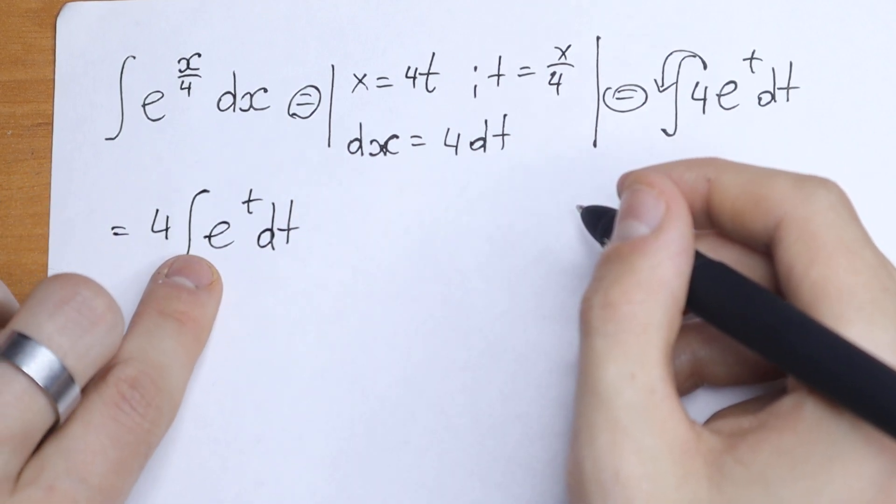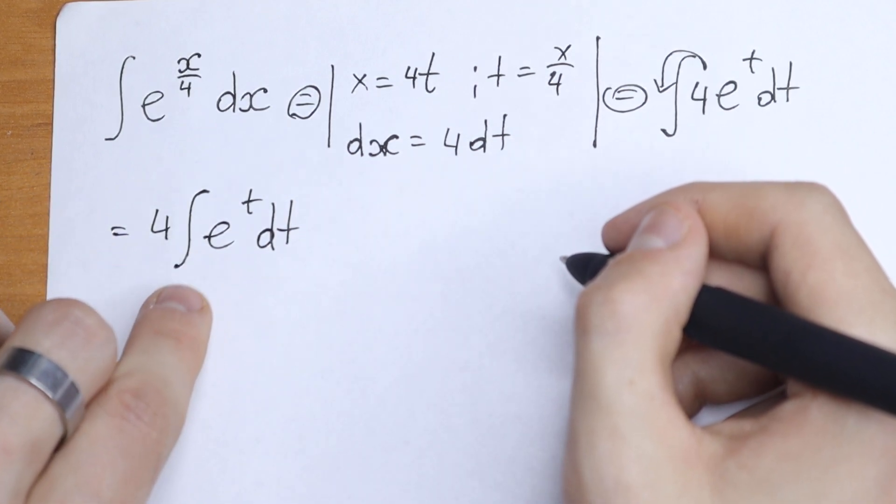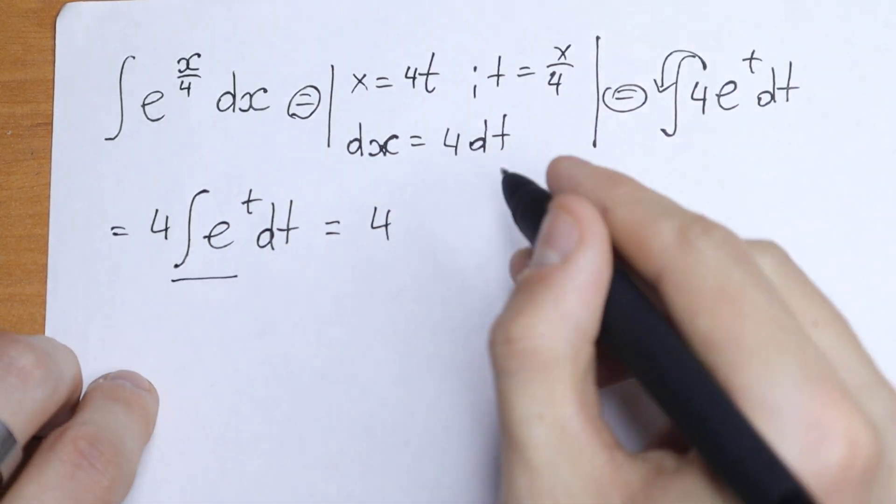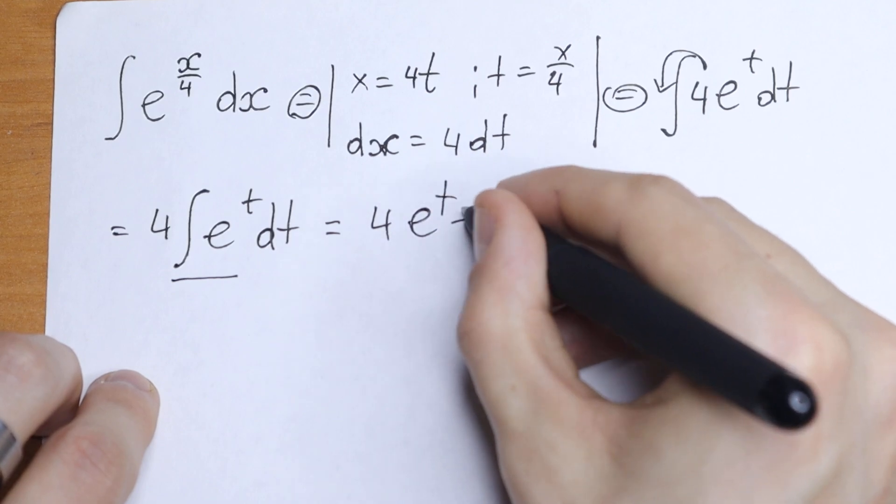We all know this is the table case. The integral of e to the power t is e to the power t. As a result, we have 4e to the power t plus c.